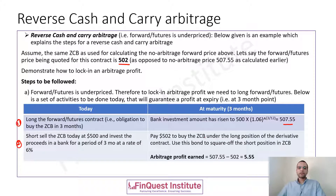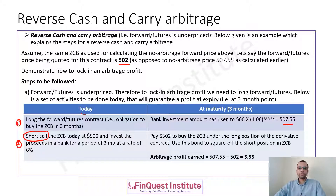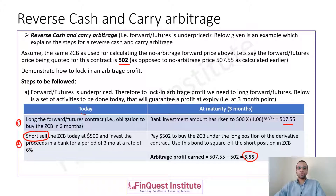This zero coupon bond is then used to square off the short position. The short sell meant we borrowed the ZCB from the broker and now return it to the rightful owner. The ZCB purchased via the forward contract is used to close the short position. The profit earned is the bank account balance of 507.55 minus the quoted forward price of 502, giving an arbitrage profit of $5.55. This is the mechanics for a reverse cash and carry arbitrage.